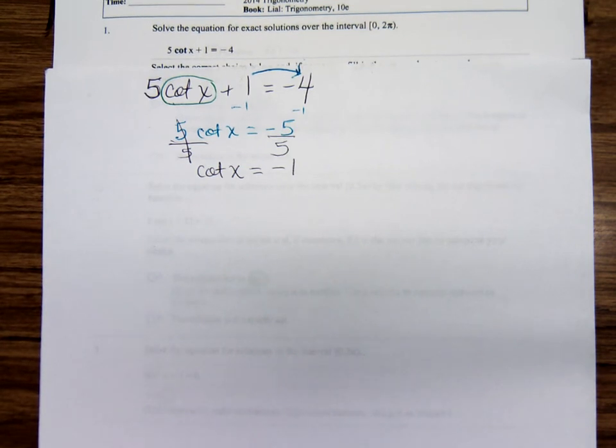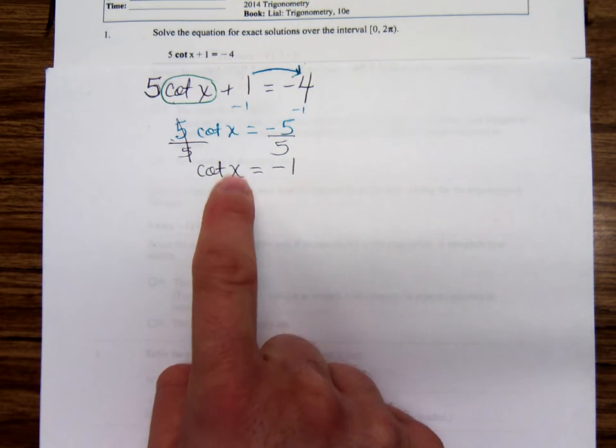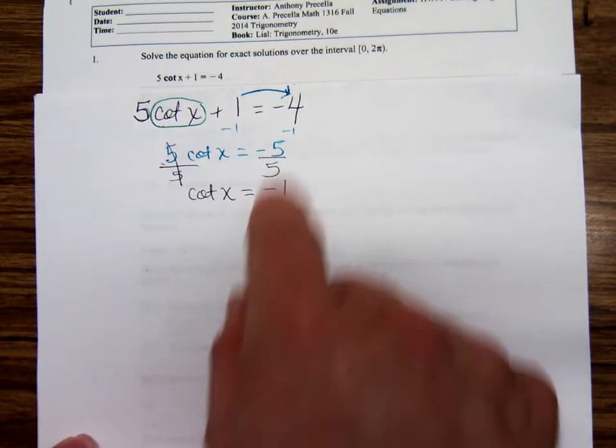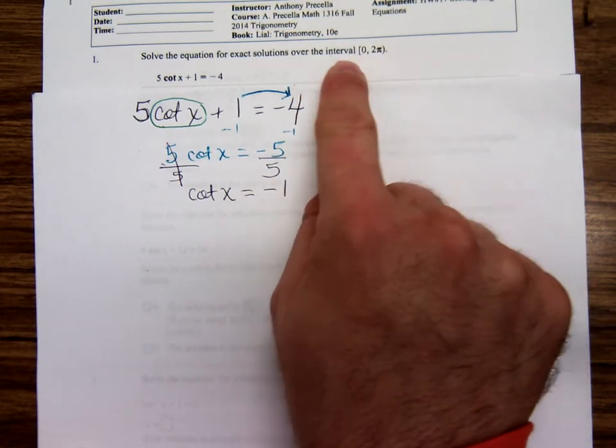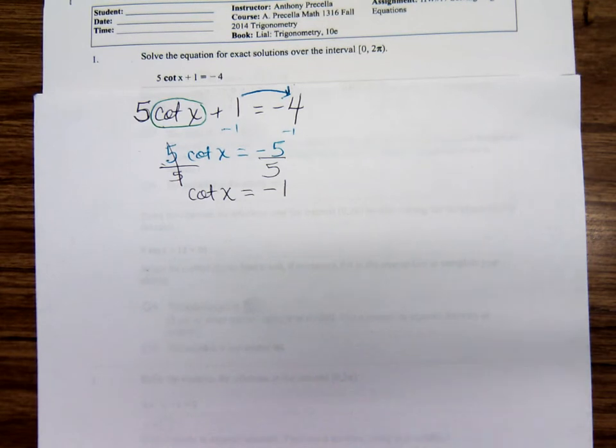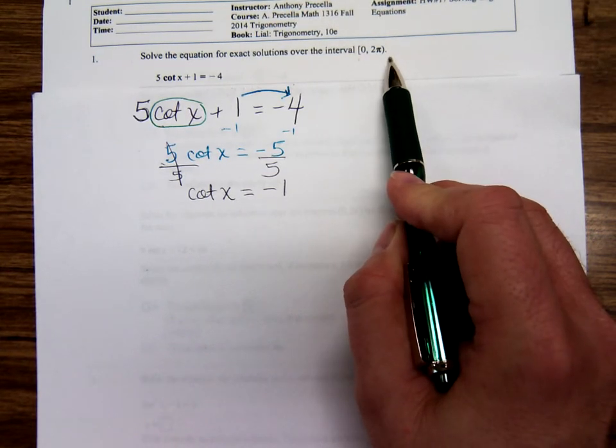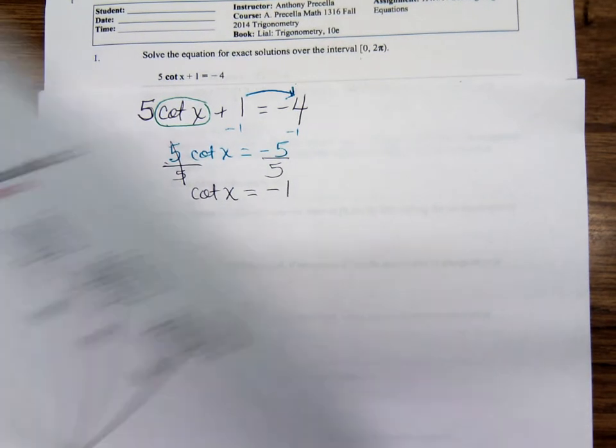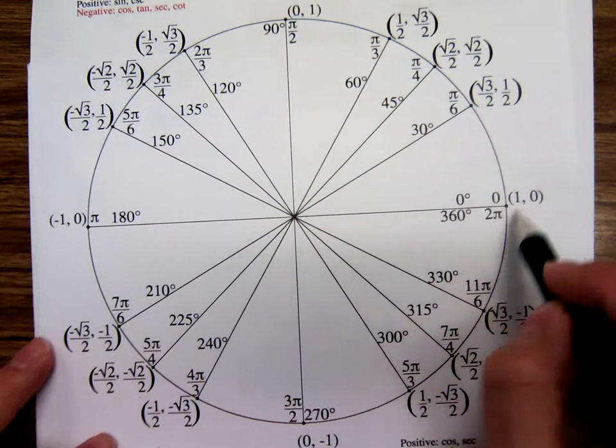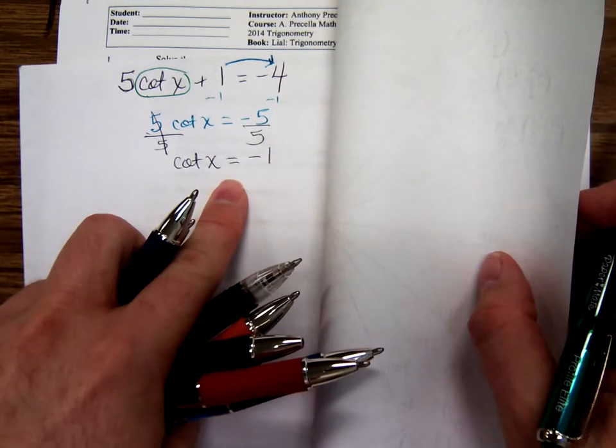At this point, you're ready to look at the unit circle. Once you have the trig function by itself, you're going to figure out where does cotangent x equal negative 1. Your answer here is going to be angle measurements, either in terms of degrees or radians. The interval 0 to 2π with a square bracket means include the 0, parentheses on 2π means don't include 2π.